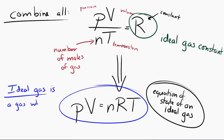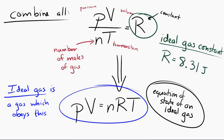R is called the ideal gas constant, and for every ideal gas, R is equal to 8.31 joules per kelvin per mole. And n is equal to the number of moles.